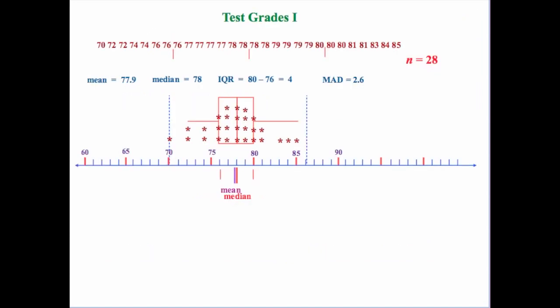So let's look at a context here. Let's suppose you're a teacher and you've given a test to your students and you have a class of 28, so there's 28 test grades. If I take these and crunch out the numbers and determine the average — the mean — that comes out to be 77.9.